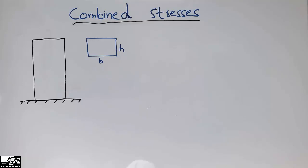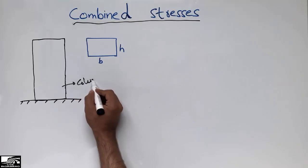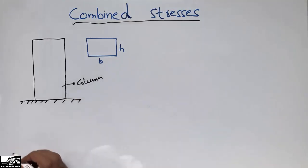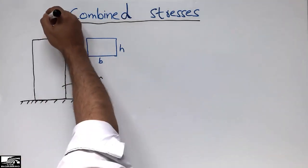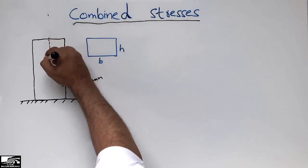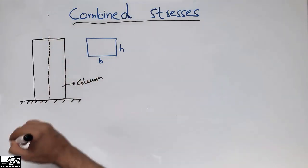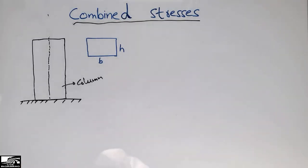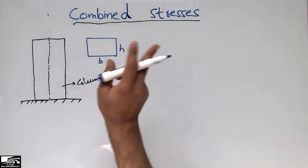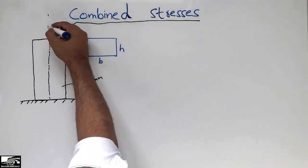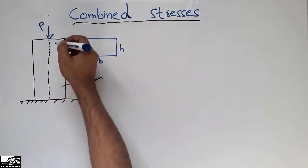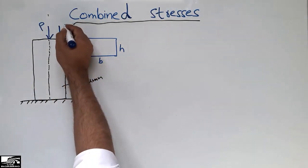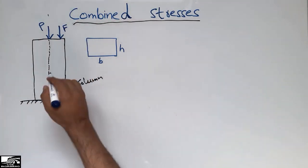I will explain the combined stresses concept with the help of an example. Consider a column with a fixed support at the ground. This is the cross-section of the column, and this is the centroid of the column. To explain combined stresses, I will take two different types of loads: one load P acting at the centroid of the column, and another load F acting away from the centroid axis.